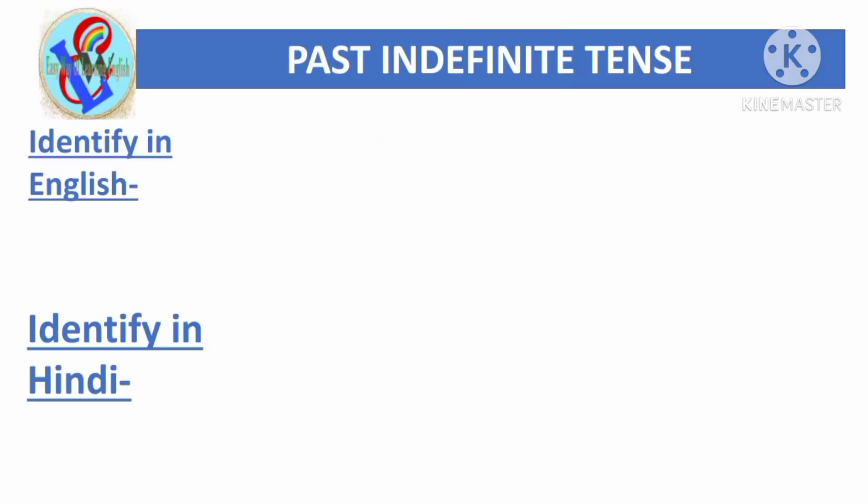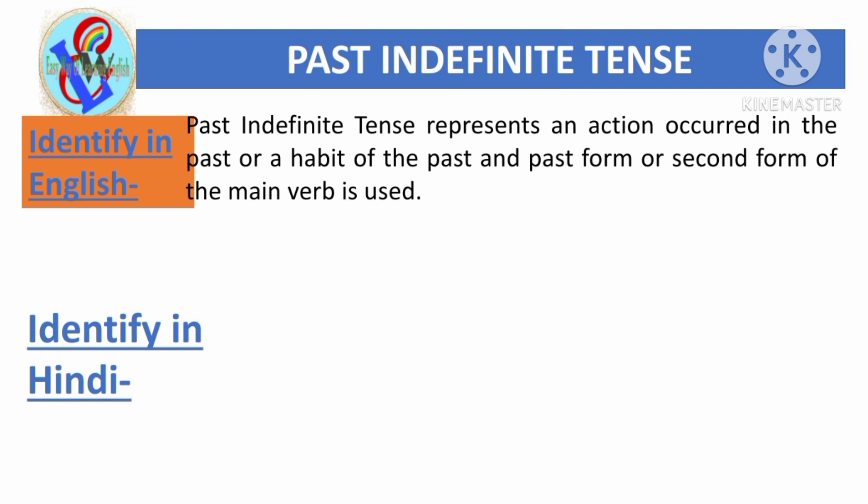How to identify past indefinite tense? Past indefinite tense represents an action occurred in the past or a habit of the past, and the second form of the main verb is used.